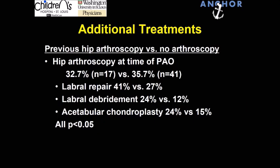In terms of additional treatments, at the time of the PAO, hip arthroscopy was performed in just over 30% of patients in both groups — those that had had previous hip arthroscopy and those that had not. In terms of intra-articular work, labral repair was done more commonly in those that had had a previous scope, as was labral debridement and acetabular chondroplasty.